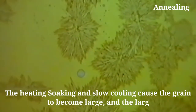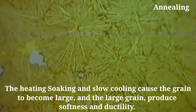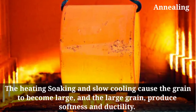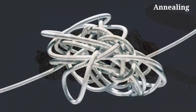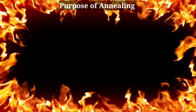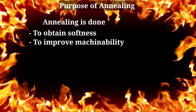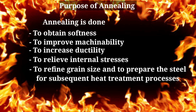The heating, soaking and slow cooling causes the grains to become large, and the large grain produces softness and ductility. The purpose of annealing is to obtain softness, to improve machinability, to increase ductility, to relieve internal stresses, and to refine grain size, and to prepare the steel for subsequent heat treatment processes.